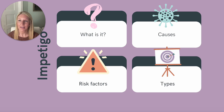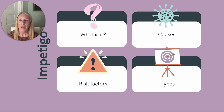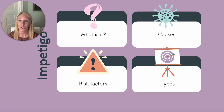First up, let's talk about impetigo. This condition is a very contagious, superficial bacterial infection of the skin. The most common pathogens are Staphylococcus aureus and Streptococcus pyogenes. Impetigo is most commonly seen in children, specifically ages 2 to 5 years old, and is most prevalent in warm, humid conditions. Impetigo is easily spread among individuals in close contact.